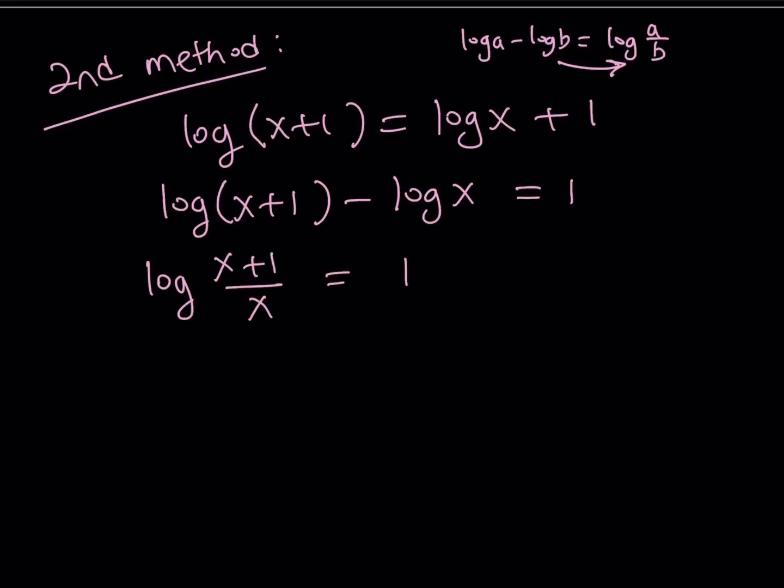Now, you have to think about this for a minute. Either use the definition or think about it. Like, log of which number is 1? Well, it needs to be the same base, so it is 10, right? Log 10 equals 1. And we used it in the first method, remember? So this must be 10. Okay, that thing must equal 10. And from here, we get (x+1)/x equals 10. And by cross multiplication, we get x+1 is equal to 10x.